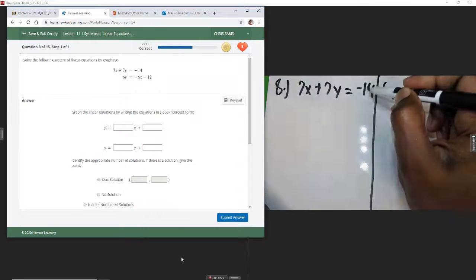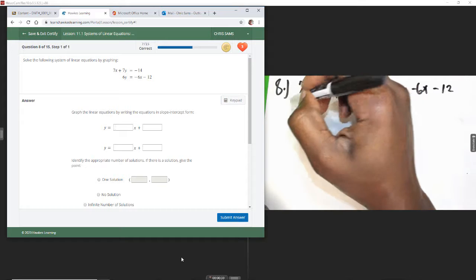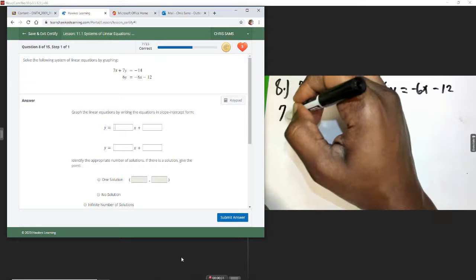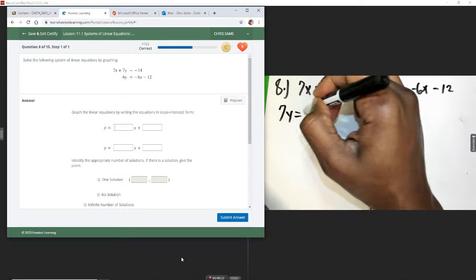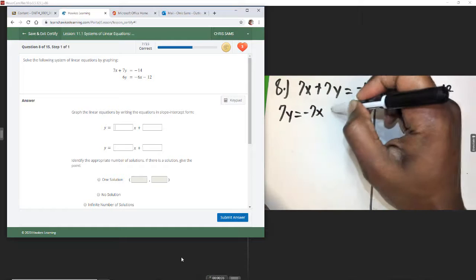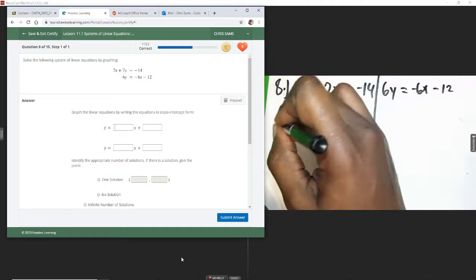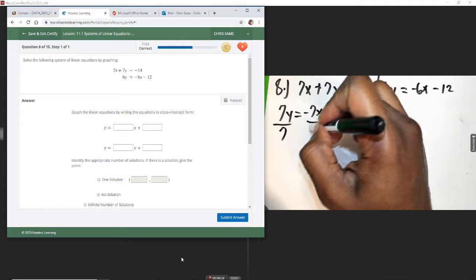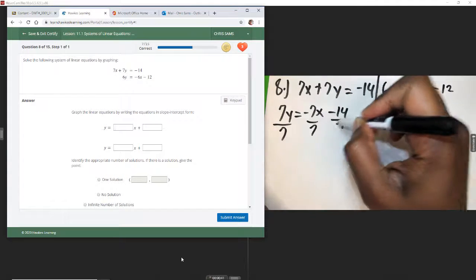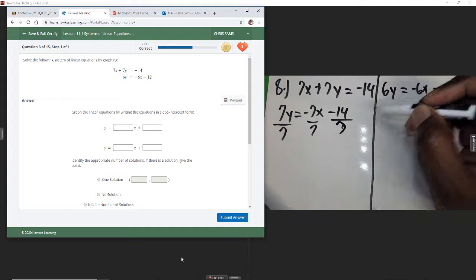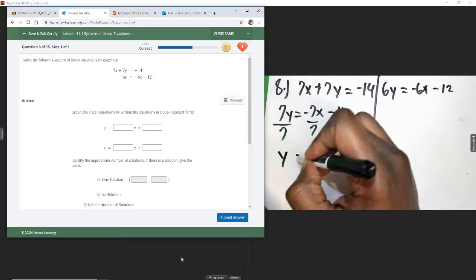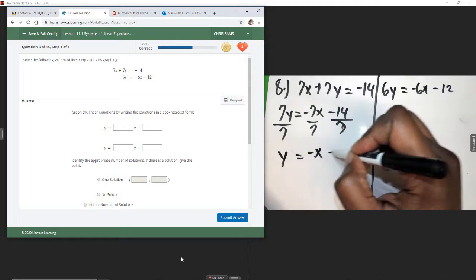I'm going to move this 7x over to the other side. That will leave me with 7y equals negative 7x minus 14. Divide everybody by 7, and we get y equals negative x minus 2.